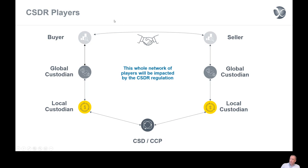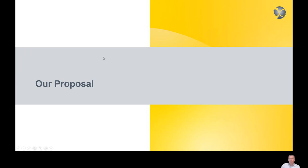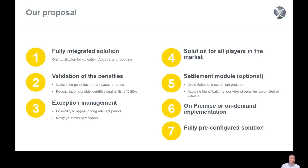Over 3,000 companies are impacted by this new CSDR regulation. Therefore, SmartStream will offer you a solution to comply with this new CSDR regulation — but not only for compliance. It will also enable you to appeal and to report further to your clients in the CSDR chain. Our proposal is a fully integrated solution: one application for validation, appeals, and reporting. We will validate the penalties that you receive through the reports from your counterparties against an internal list of failures.